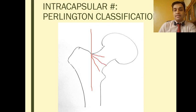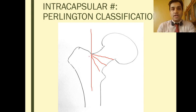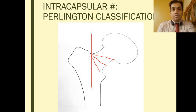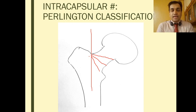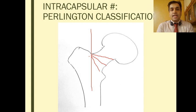and Perlington C is about 70 degrees from the vertical. Remember the rule of 30, 50, 70.